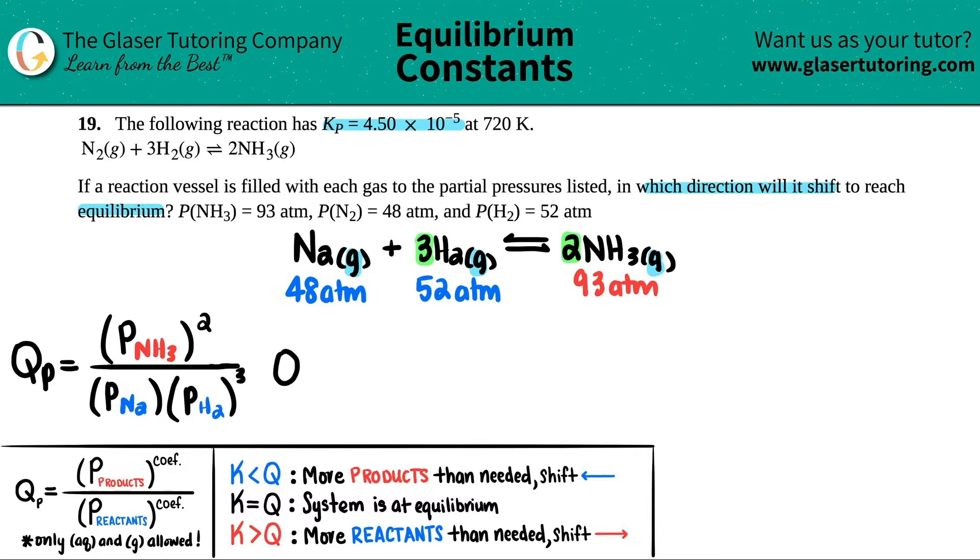Okay, now we have the formula. Let's plug in the numbers. QP equals something over something else. Let's see. The product was 93. I'm going to close that. This is going to be squared.